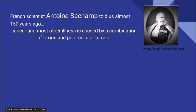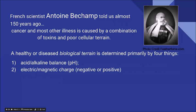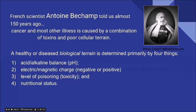Scientist Antoine Béchamp told us about 150 years ago that cancer and most other illness is caused by a combination of toxins and poor cellular terrain. A healthy or diseased biological terrain is determined primarily by four things: number one, the acid-alkaline balance or pH balance; number two, the electromagnetic charge, negative or positive; number three, the level of poisoning or toxicity; and number four, the nutritional status.